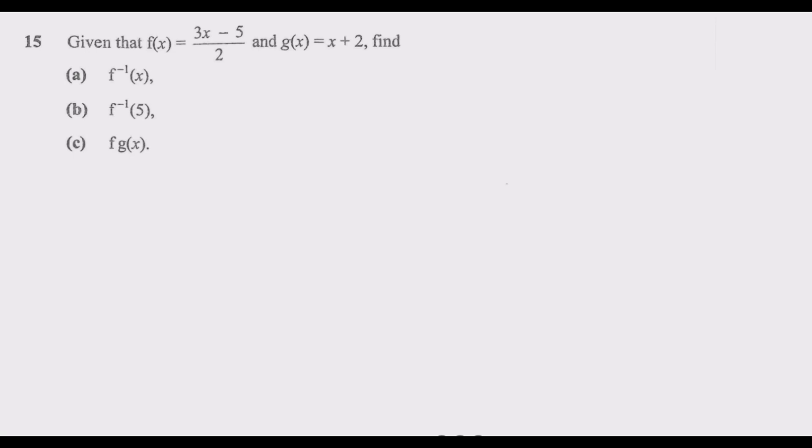There is always a question on this topic, so we have 1 mark. The first thing that you need to do is whenever there is f(x), you put y. So let us say y is equal to (3x - 5)/2. That's step 1. You substitute whatever there is f(x) with y.